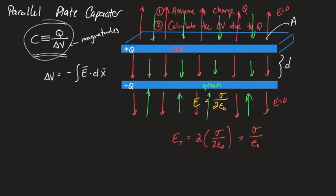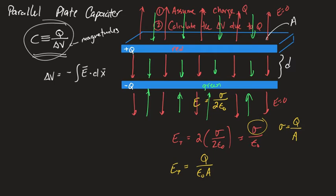I don't want to leave this in terms of sigma — I want it in terms of charge Q, since that's what we charged the plates with. Sigma is charge divided by area of the plate — coulombs per meter squared is the charge density. So I can say the total electric field E is Q over epsilon naught times A. Now I need the electric field because I want to calculate the change in potential from the top plate to the bottom plate.